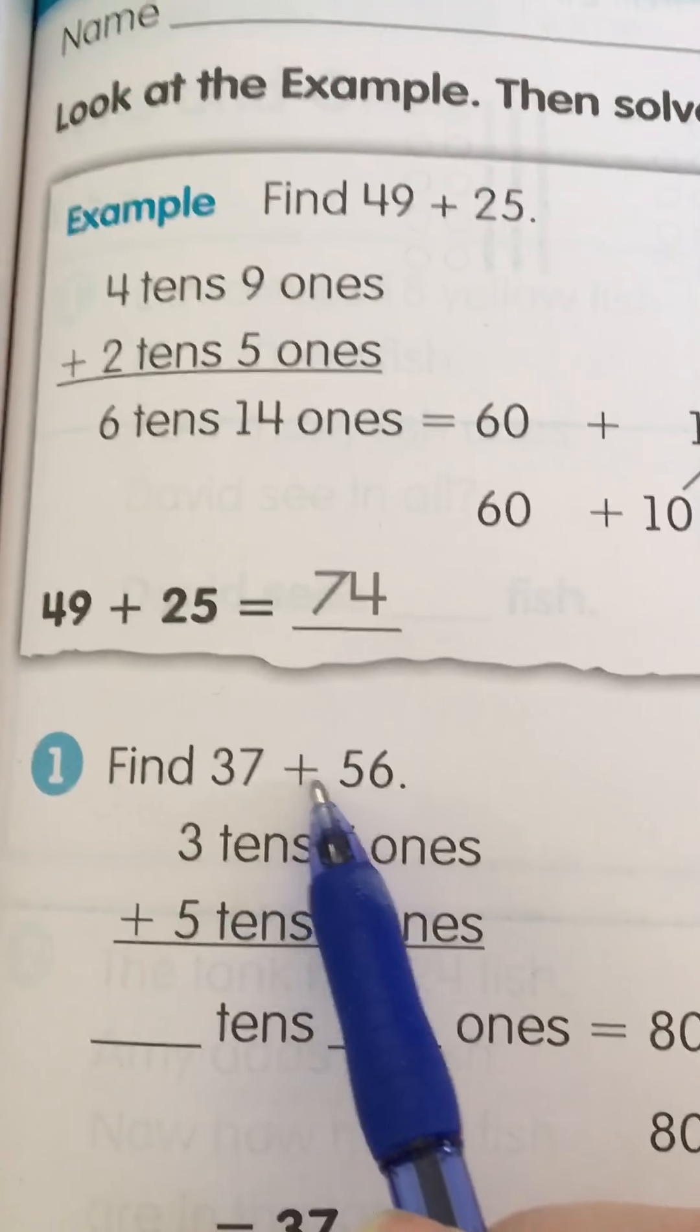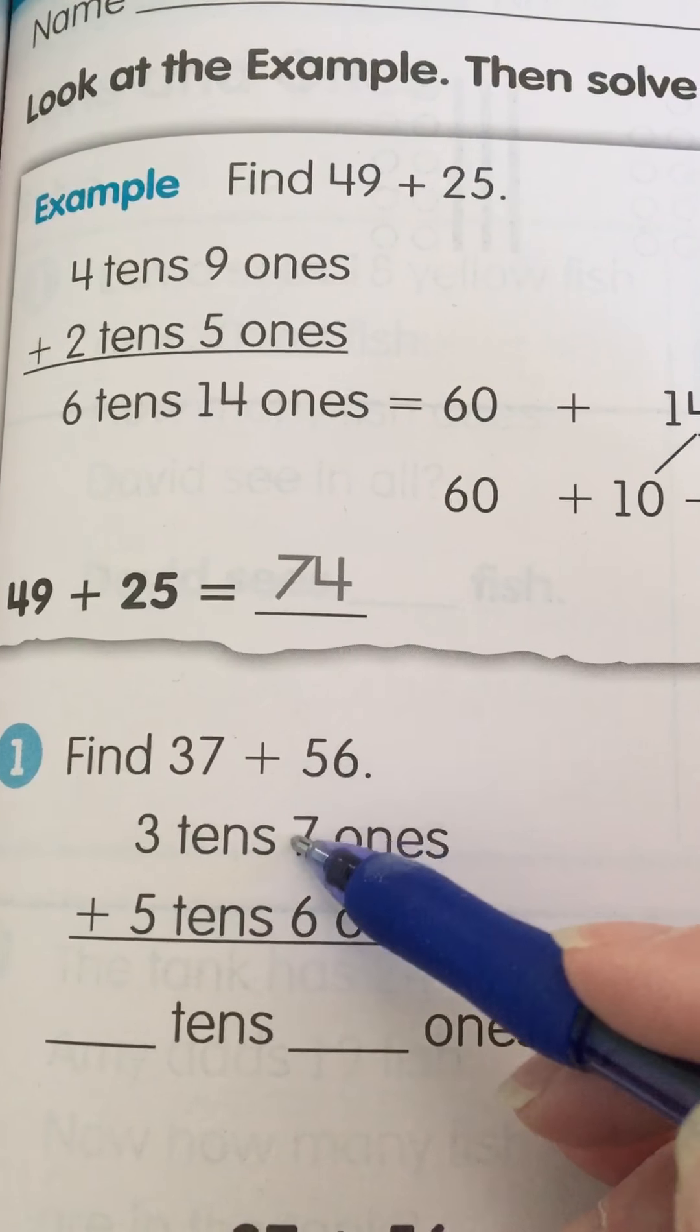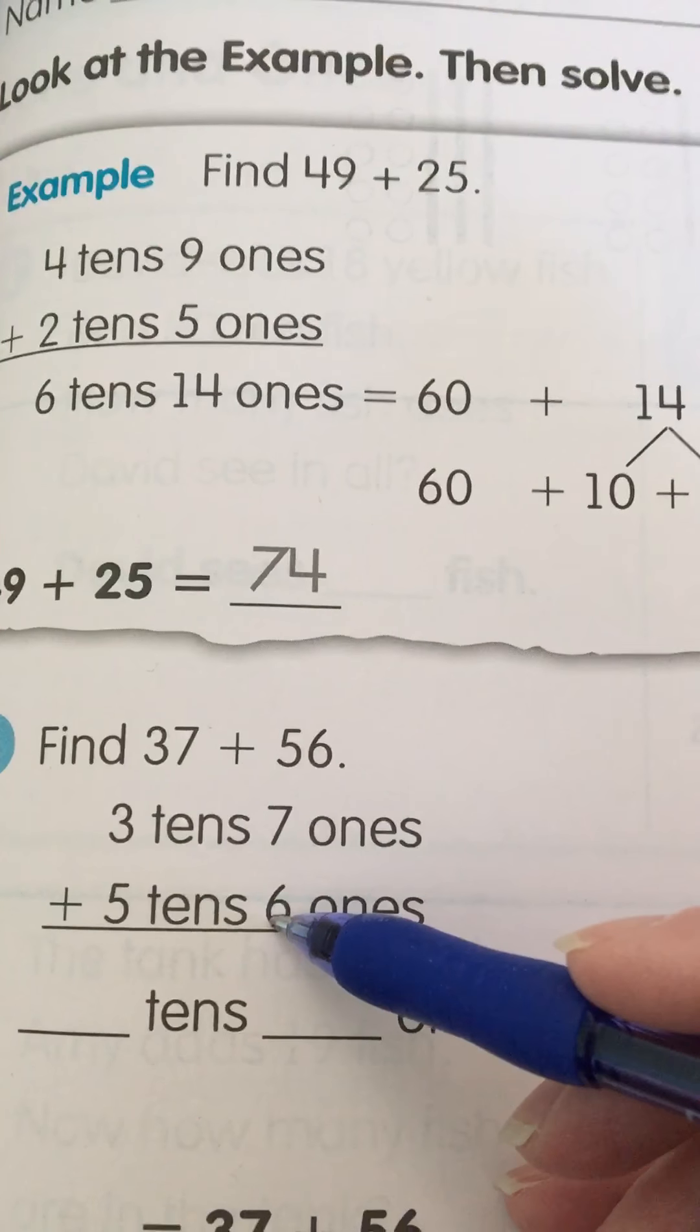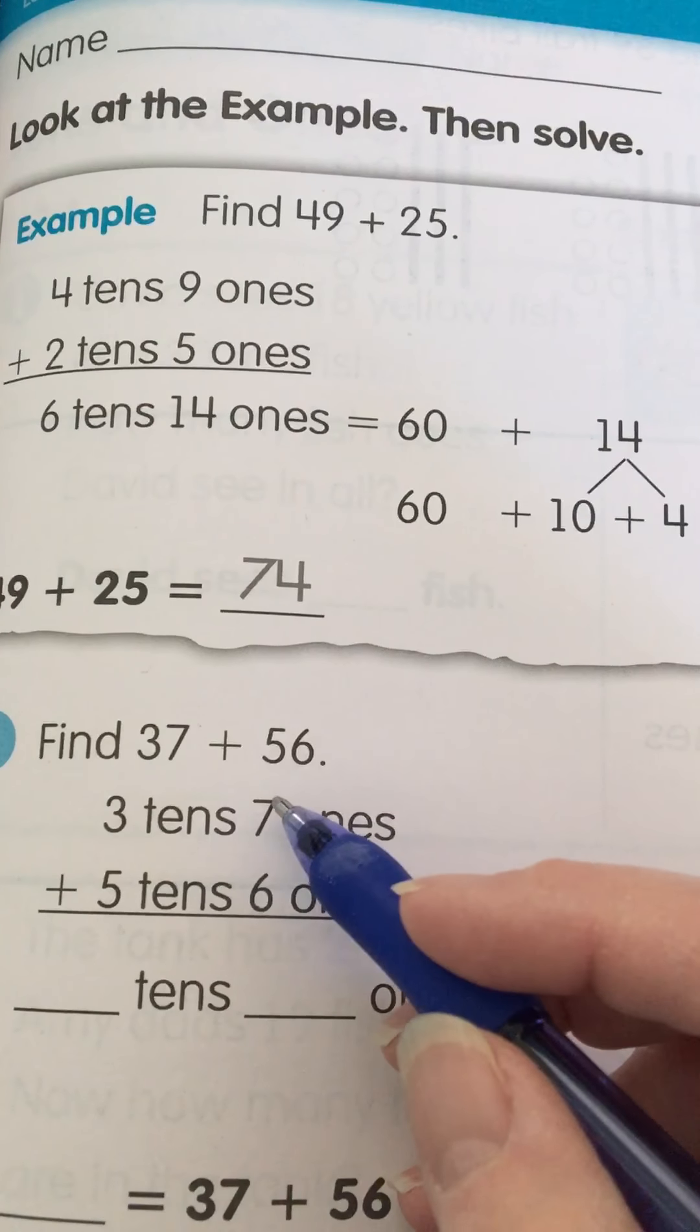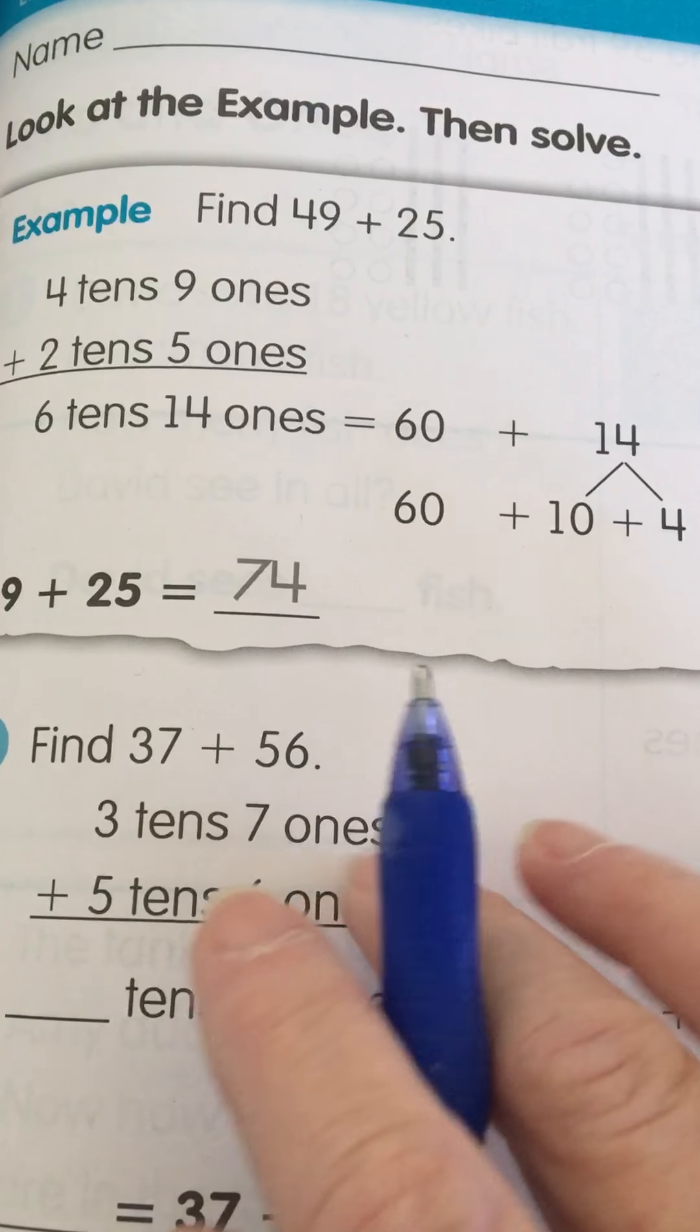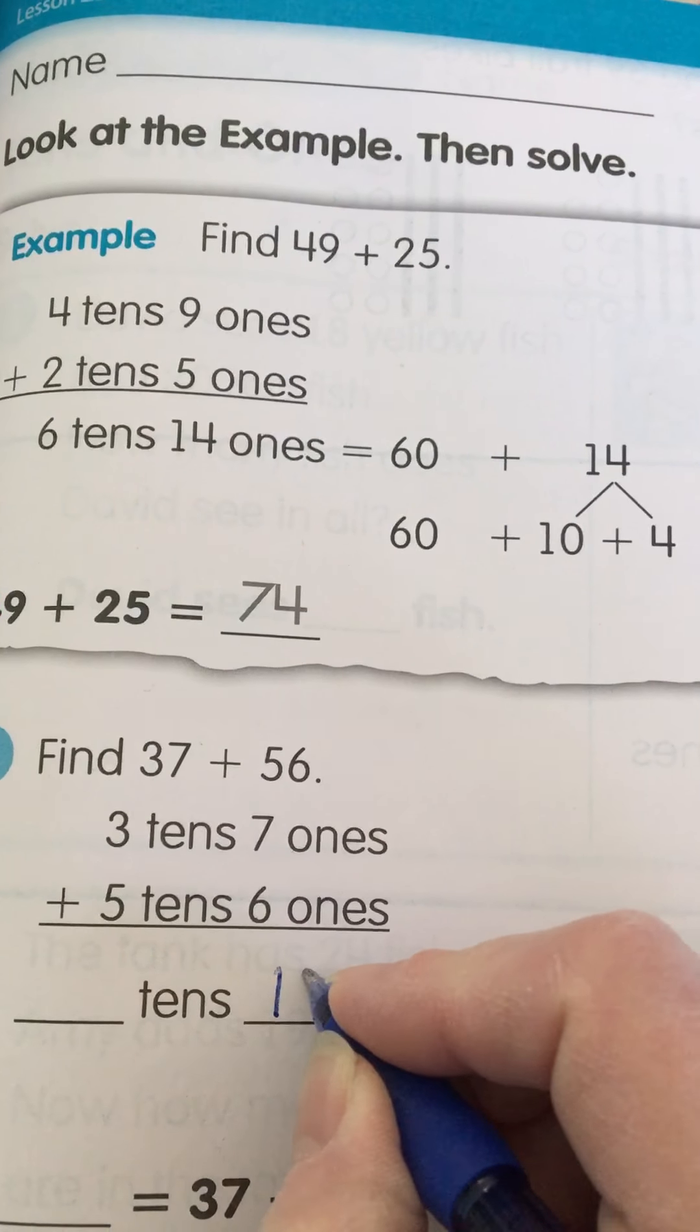Find 37 plus 56. So we have seven ones and six ones. Seven ones and six ones is 13. Seven in my head, eight, nine, ten, eleven, twelve, thirteen. So we have 13 ones.